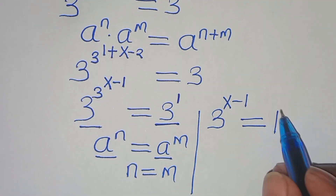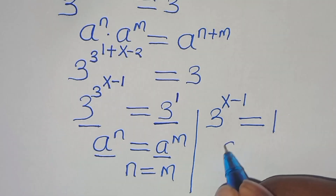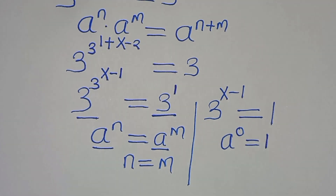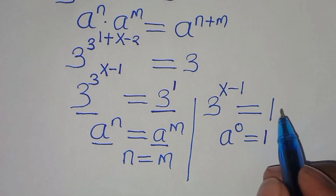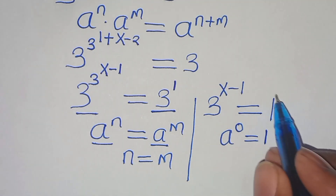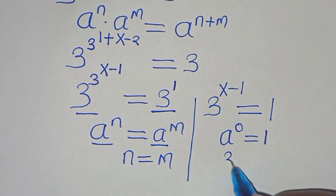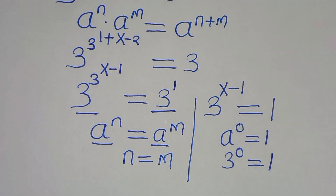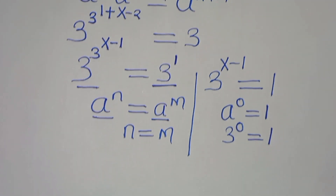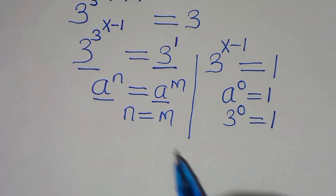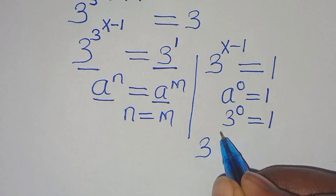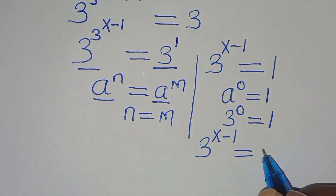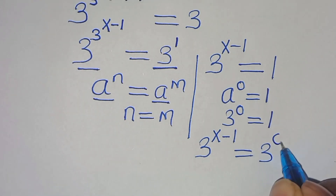The next step: recall that a to the power of 0 equals 1. So we can express this 1 as 3 to the power of 0. This gives us 3 to the power of x minus 1 equals 3 to the power of 0.